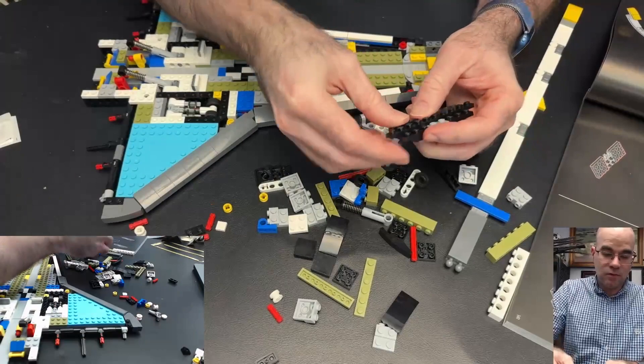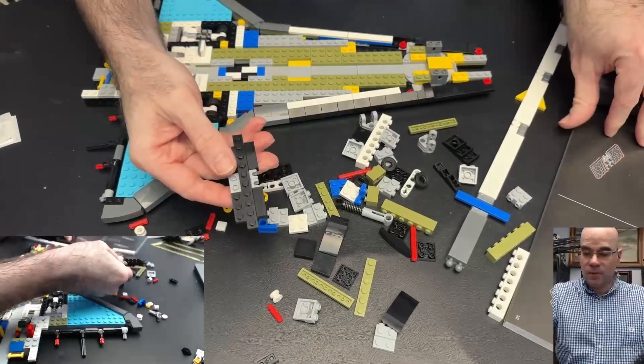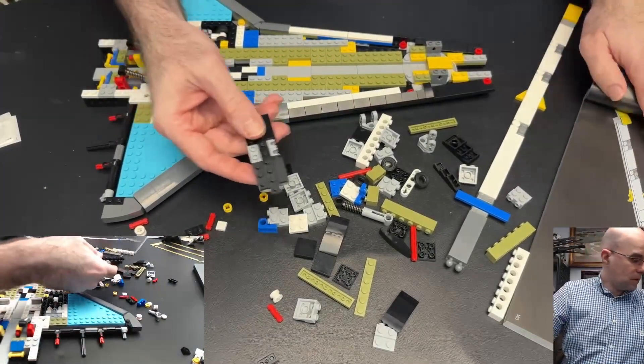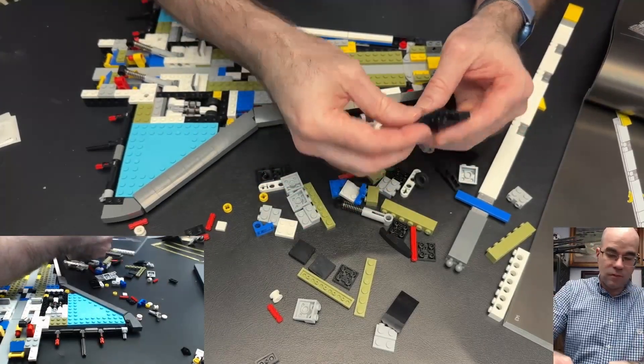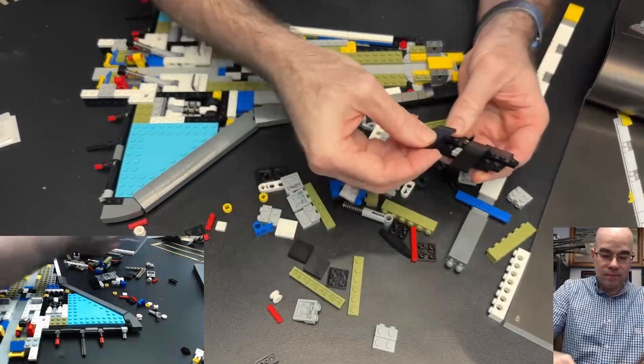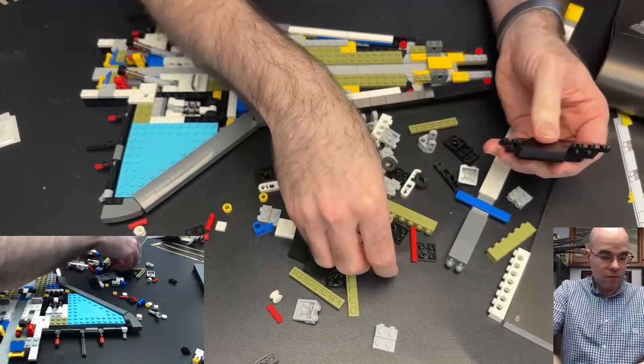Okay, now these curved slopes sit on top here, these long curved slopes. There should be four of them.